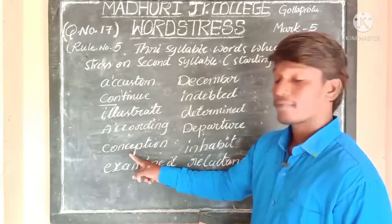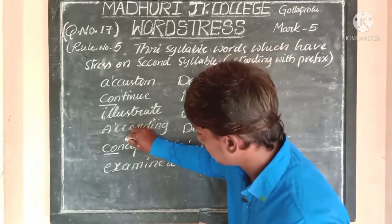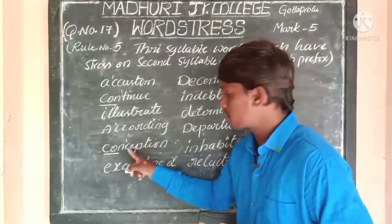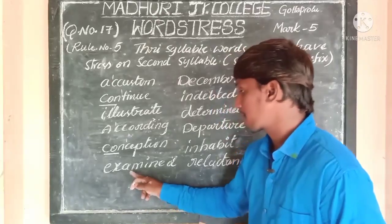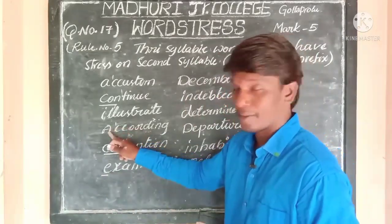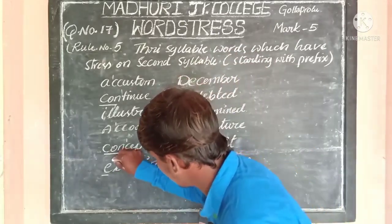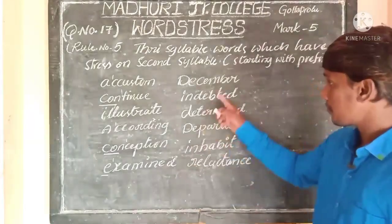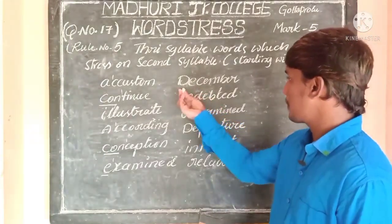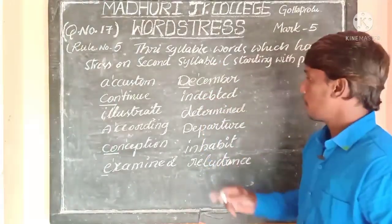Next is 'conception' — CON is a prefix, second syllable starts from C: con-CEP-tion. Stress is on the second syllable, which starts from the C letter. Next is 'examined' — E itself is a sound like A in 'according,' so the second syllable starts from X: ex-AM-ined. Stress is on the second syllable. Next is 'December' — DE is a prefix, second syllable starts from SEM: de-CEM-ber.